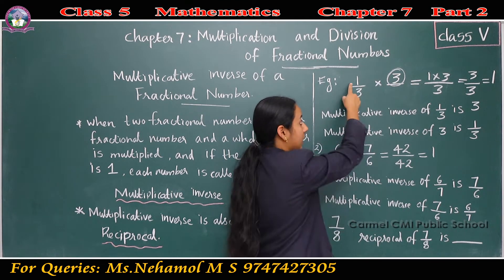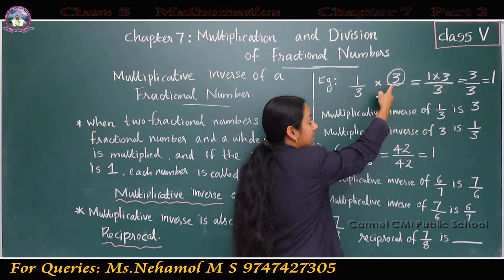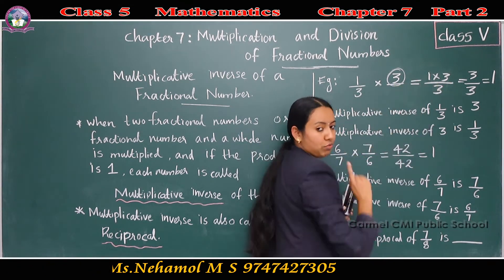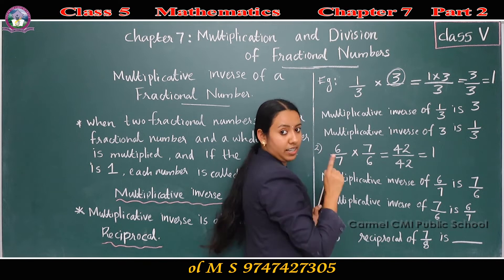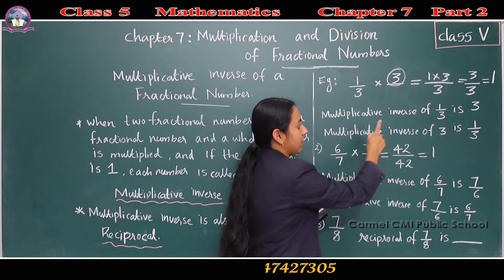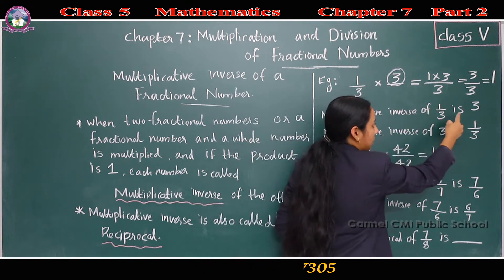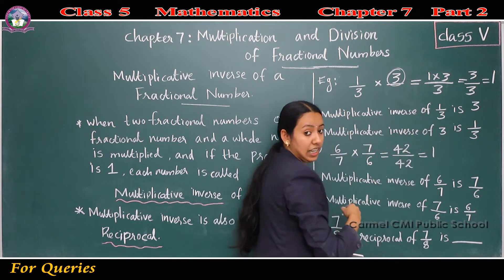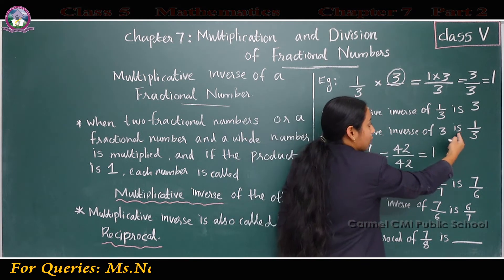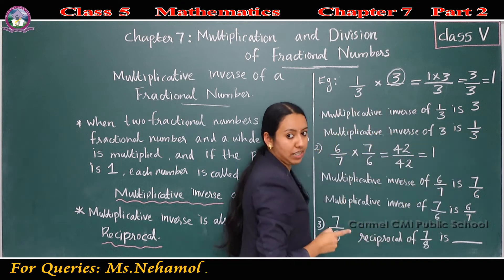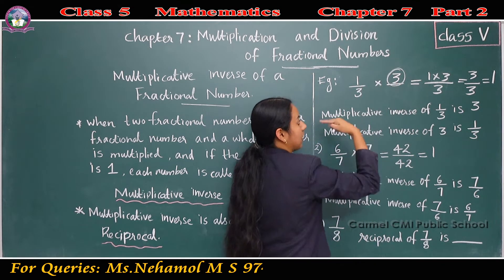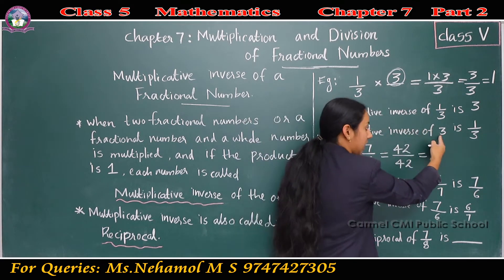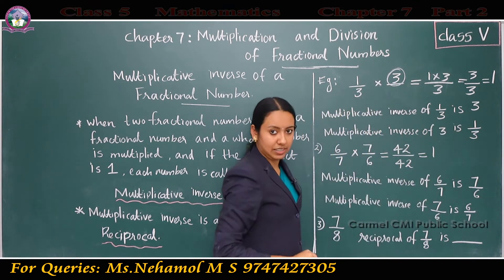Reciprocal or multiplicative inverse of 1/3 is 3, because 1/3 into 3 is 1 — that is the condition. Then, what is the multiplicative inverse of 3? Multiplicative inverse of 3 is 1/3, because 3 into 1/3 is also 1.